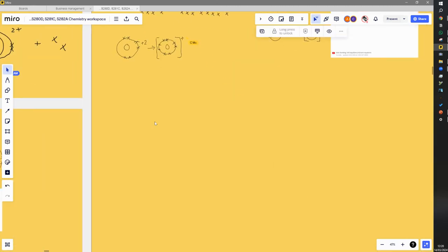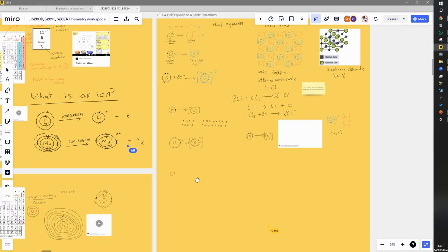So with half equations, we just looked at a couple of examples. We looked at the example of chlorine, and the exam question just said, show a half equation to show the ionization of chlorine. And you have to fill in some gaps, but basically what we need to do is we need to find the periodic table.